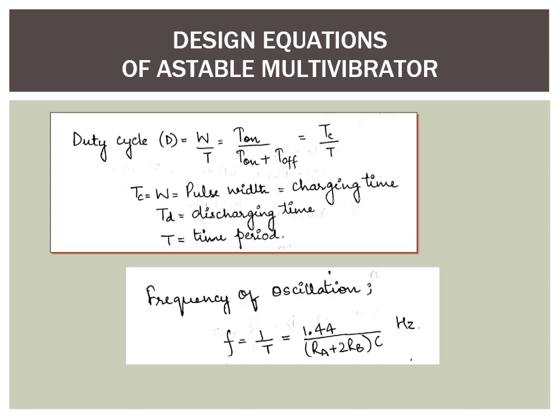The same thing is written in terms of T-on and T-off: Tc corresponds to T-on and Td corresponds to T-off. The frequency of oscillation is computed as F = 1/T, which is mathematically derived to be equal to 1.44 divided by (Ra + 2×Rb) × C. This is the general equation and it is not specific to any particular duty cycle, so the frequency equation F = 1/T must be used irrespective of the duty cycle mentioned.